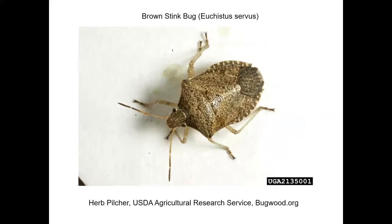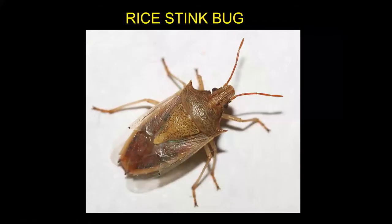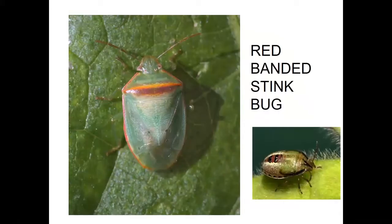Brown stink bug is a common pest of soybeans and other row crops. Immature brown stink bugs are more difficult to kill than the green stink bugs. Red banded stink bug is becoming a more serious pest in Alabama. It's harder to kill than other stink bugs, has a relatively large proboscis, and can feed on larger soybeans. It also moves lower down on the plant than some other stink bugs.